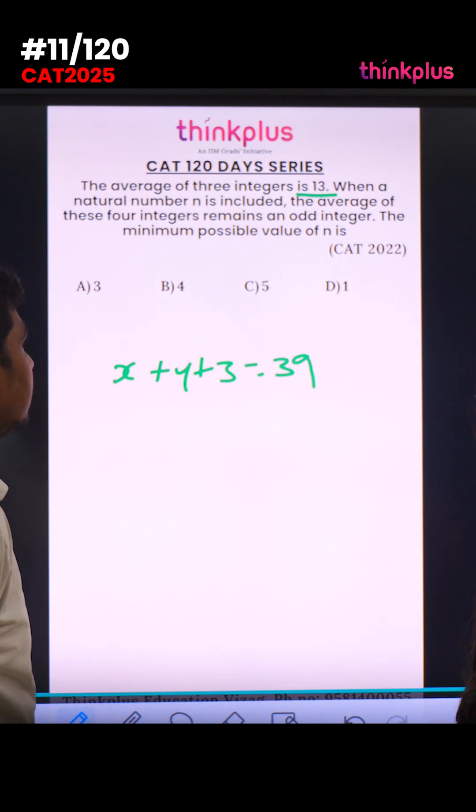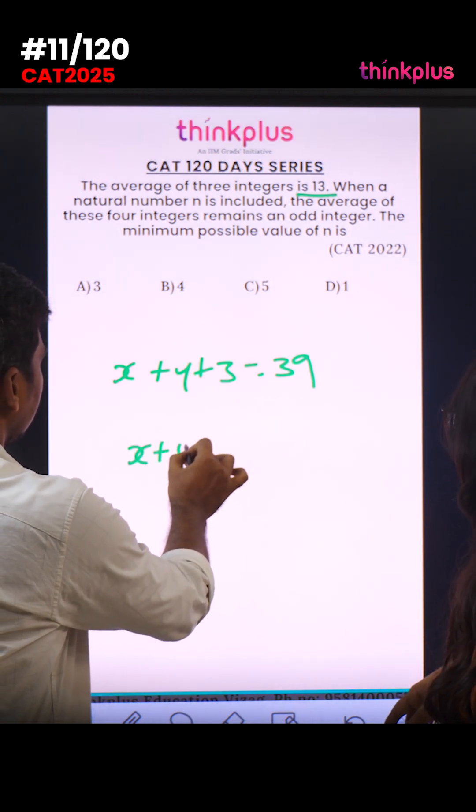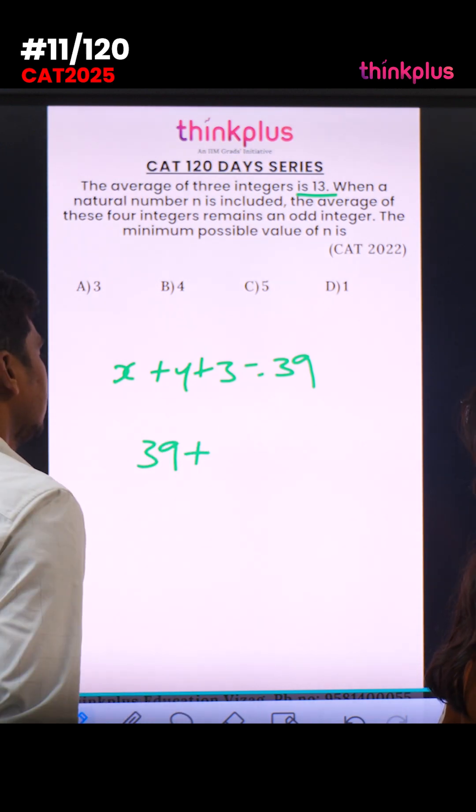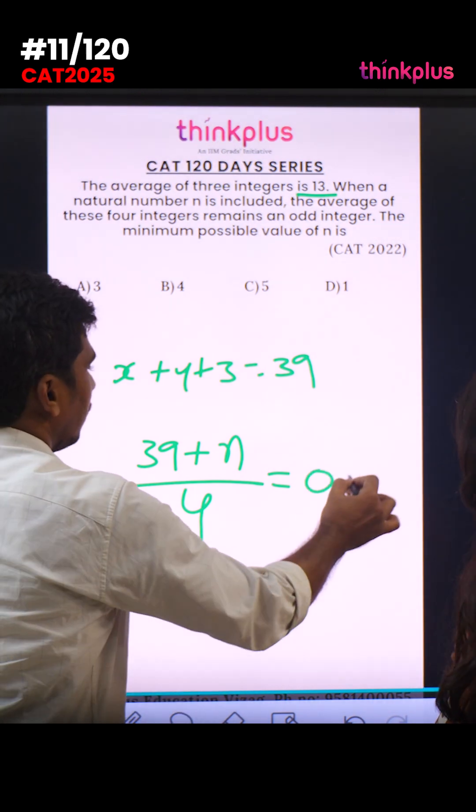When a natural number n is included, the average of these four integers remains an odd integer. 39 plus n. Four numbers covered. 39 plus n by four. One odd integer. The odd number is odd.